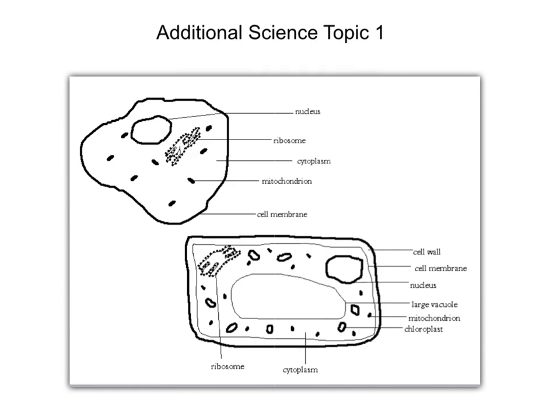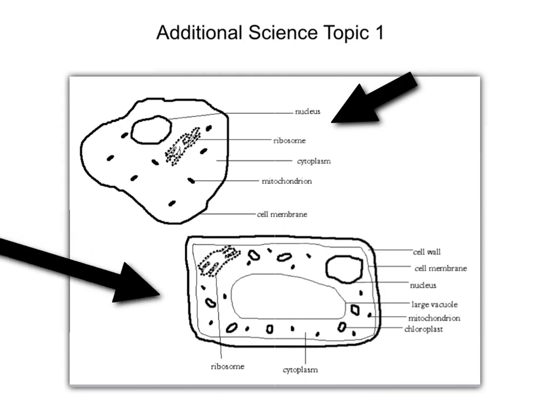Okay, so this is our first topic and it's cells, and there are various things you're going to need to know. Let's have a look at the cells we've got here on this page. First of all, the first cell that we're looking at is an animal cell. So this one here is an animal cell, and this one here down the bottom is a plant cell.